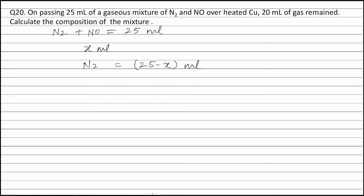Out of nitrogen and nitric oxide, only nitric oxide reacts with copper. So we can write the equation: Cu + NO → CuO + N₂.